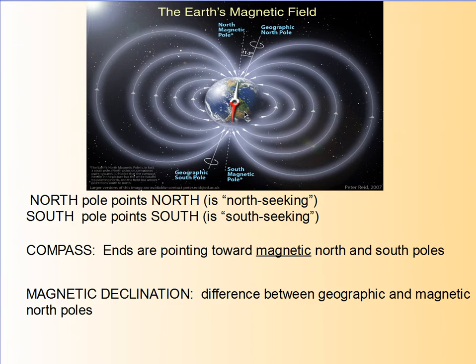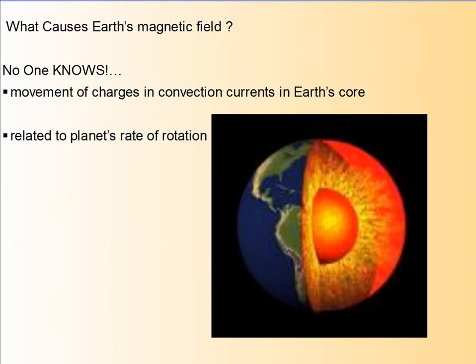For the most part down here in Houston it doesn't matter to us. However, up in the north pole area, the magnetic declination becomes very important if you're trying to find a geographic position. What causes the earth's magnetic field? We honestly don't know. They believe that the movement of charges in the core causes the strong magnetic field, and that's related to the planet's rotation.